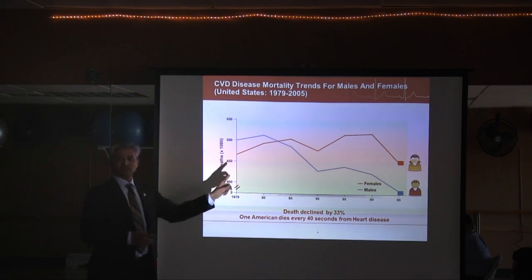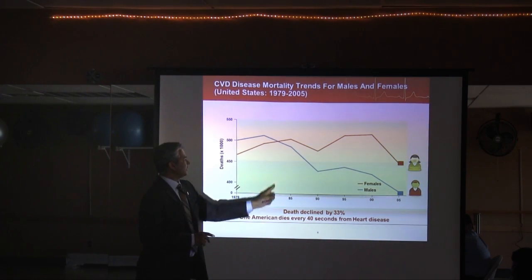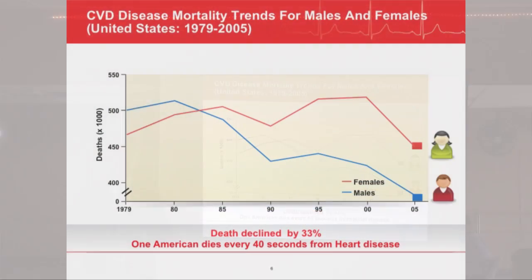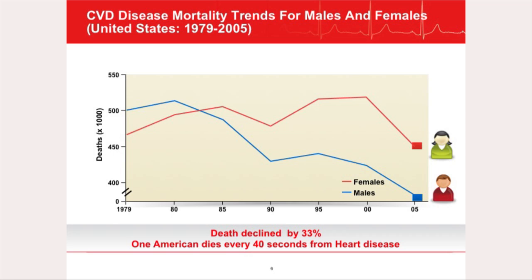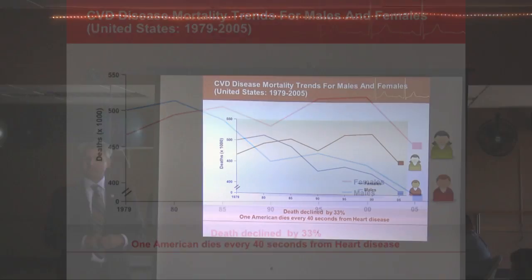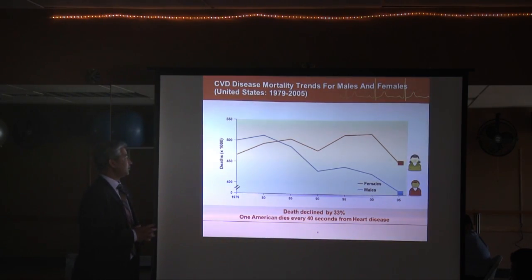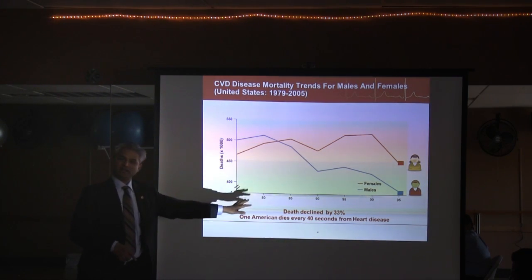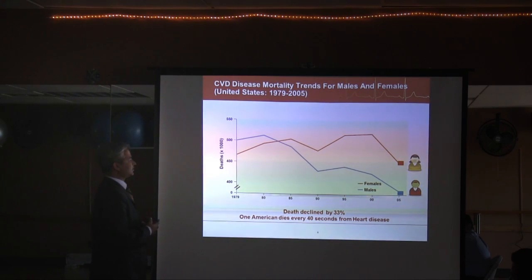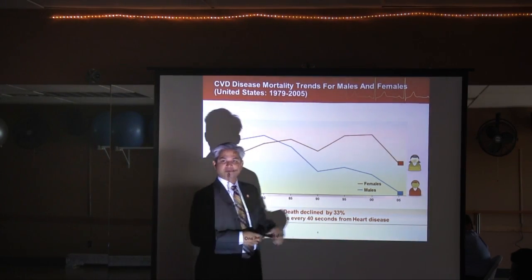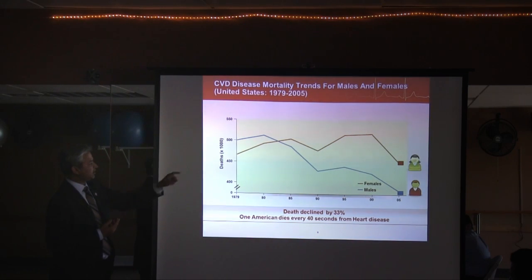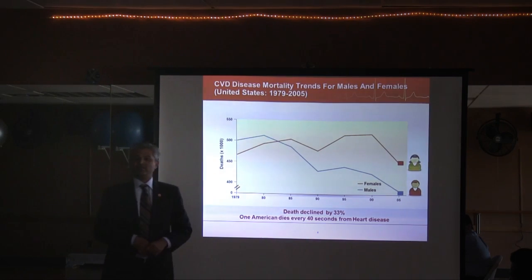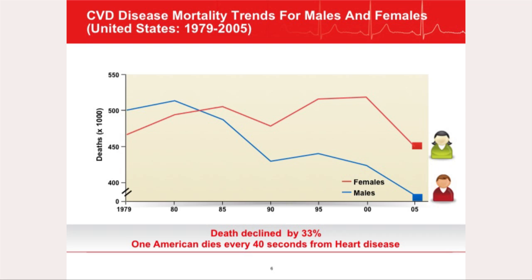Looking at the trend from 1979 to 2005, somewhere in the early 1980s the graphs changed — men were dying more from heart disease, but women took over. The key factor in the early 80s was that women started smoking in the 70s and late 80s, catching up with the risk of heart disease. Death rates are going down for both, but women's rates still lag behind.